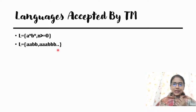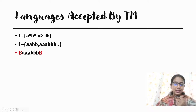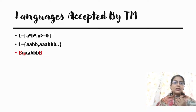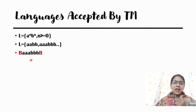Let me give an example just to show the concept. The tape contains symbols — A, A, A, B, B, B. The tape has an infinite number of cells. In the input, we also have a special type of symbol called the blank symbol. The blank symbol is not part of the input alphabet.